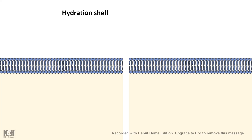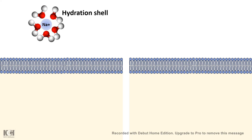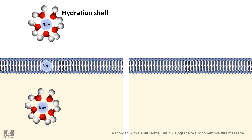Before going further, we should understand the thermodynamic constraints of transporting ions across the membrane. Imagine we have a sodium ion and we want this sodium ion to traverse across the membrane by passive diffusion and reach the inside of the cell. The sodium ion is not isolated in the environment — it is always interacting with water molecules, forming a hydration shell. When the sodium ion enters the membrane leaflet, it faces an uneasy situation because it is charged, while the inside of the lipid bilayer is an extremely hydrophobic environment, making the sodium ion very unstable and creating a huge energy barrier for diffusion.